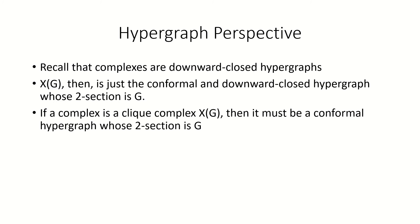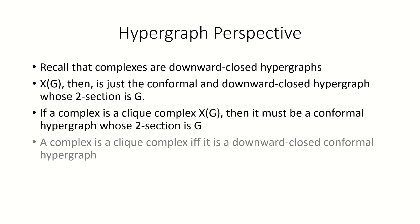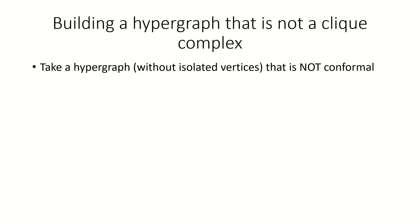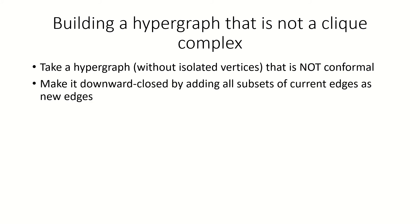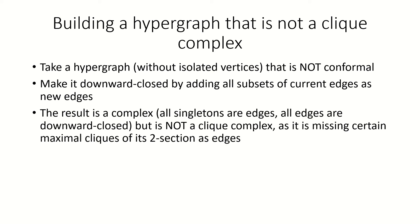Basically, conformal hypergraphs can only fail to be clique complexes if they also fail to be abstract simplicial complexes at all, and there's only one way for that to happen: their edges are not closed under taking subsets. Coming back to our hypergraph perspective, a complex is a clique complex if and only if it's a conformal hypergraph whose edges are closed under taking non-empty subsets. Additionally, if we take any hypergraph without isolated vertices that's not conformal and then make that hypergraph's edges closed under taking subsets, then while the result is an abstract simplicial complex, the resulting complex can't be the clique complex of any graph, because by construction such a hypergraph would be a complex that's not conformal.